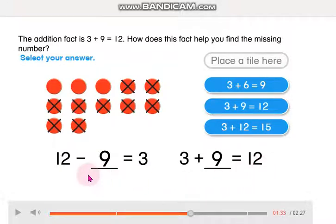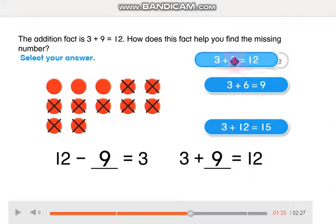Okay, so we have here 12 minus 9 equals 3. And remember that we can use addition to solve a subtraction. So the addition here is 3 plus 9 equals 12. Yes, 3 plus 9 equals 12.